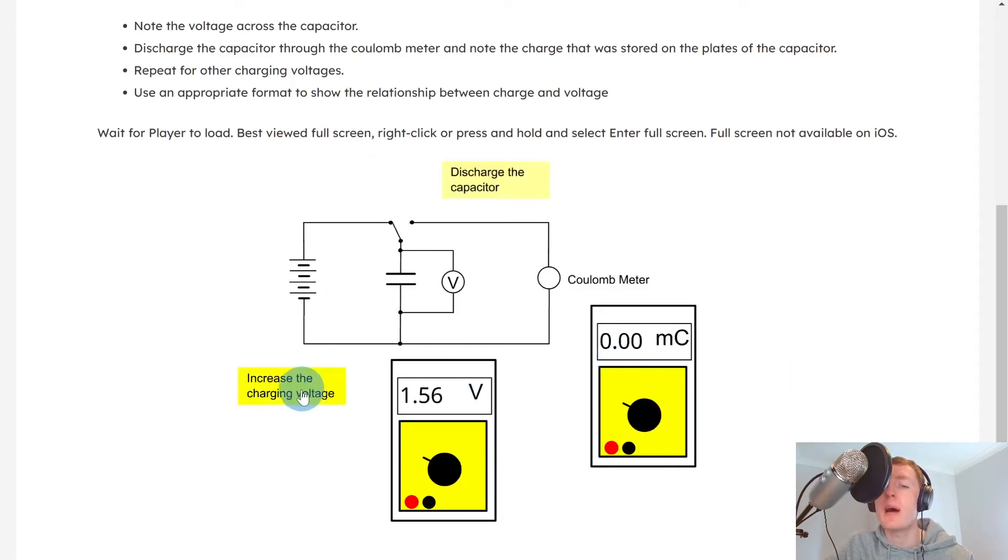We would then charge the capacitor and increase the voltage to the next one, 3.03 volts, and then discharge the capacitor again. This time we get 15.1 millicoulombs. We could then charge the capacitor again, increase the voltage to 4.54 volts, and then discharge the capacitor, and we get 22.7 millicoulombs.